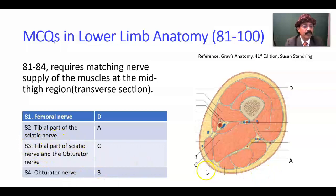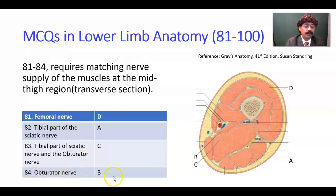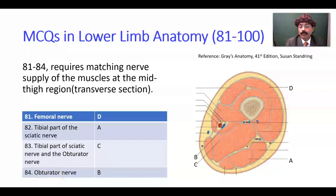Question 83: C here is the adductor magnus, which has dual innervation — nerve supply by the tibial part of sciatic nerve and the obturator nerve, posterior division. Question number 84: B is the adductor longus, nerve supply by the obturator nerve.